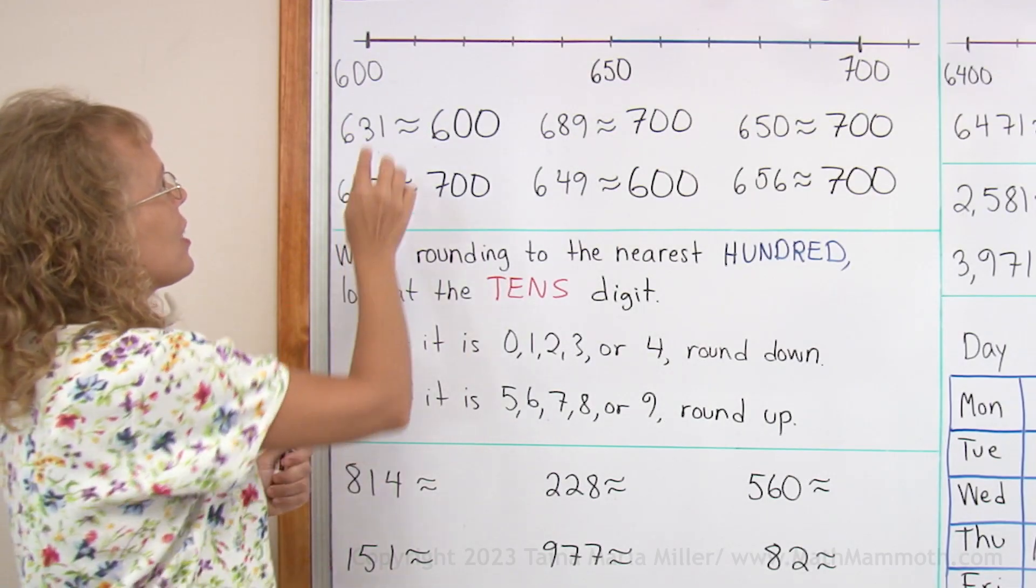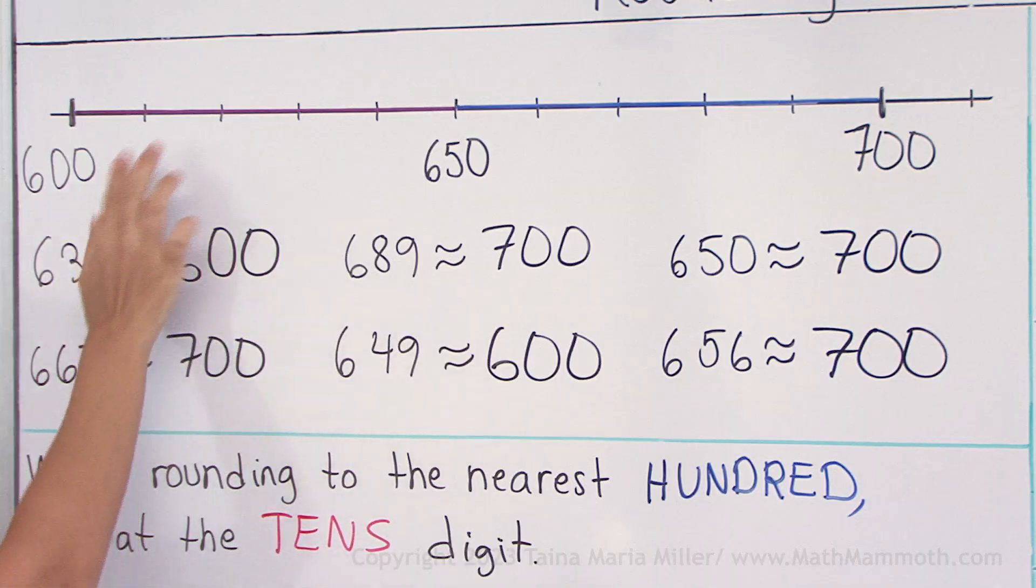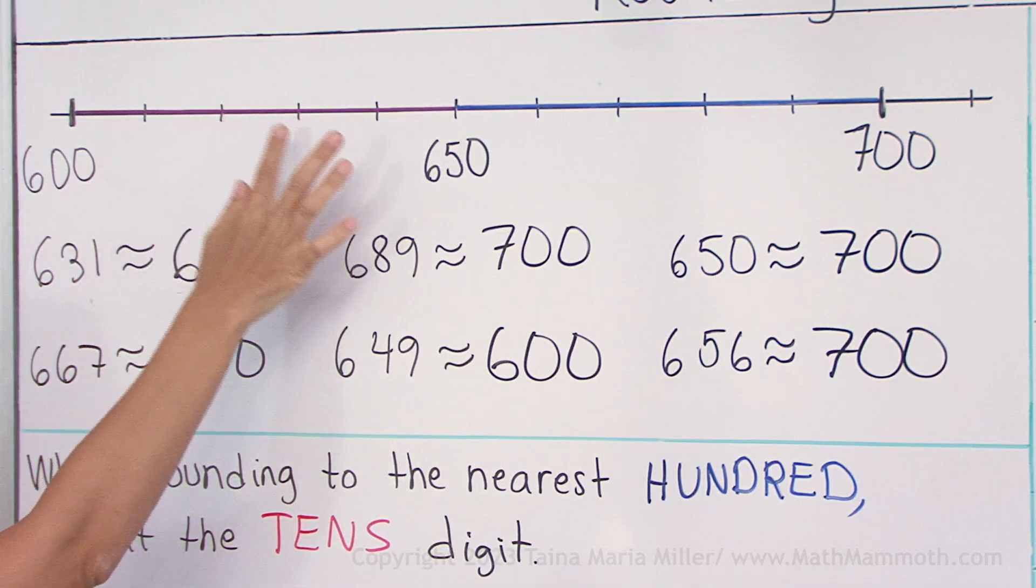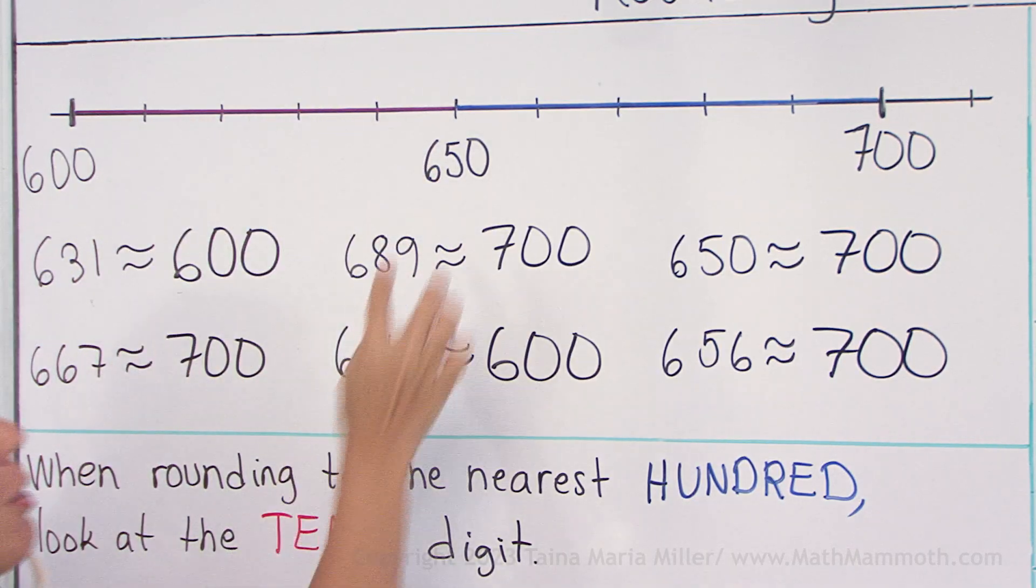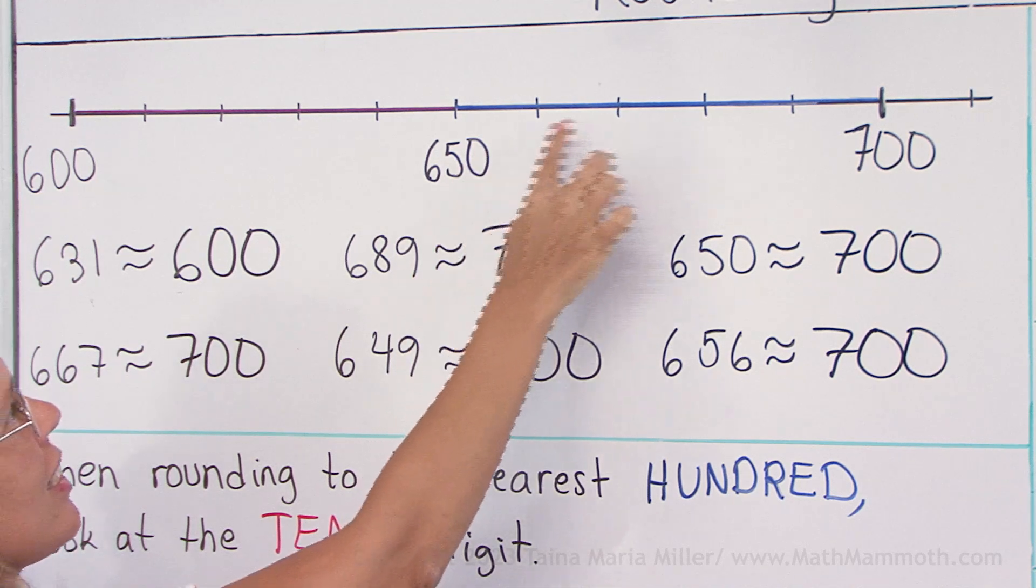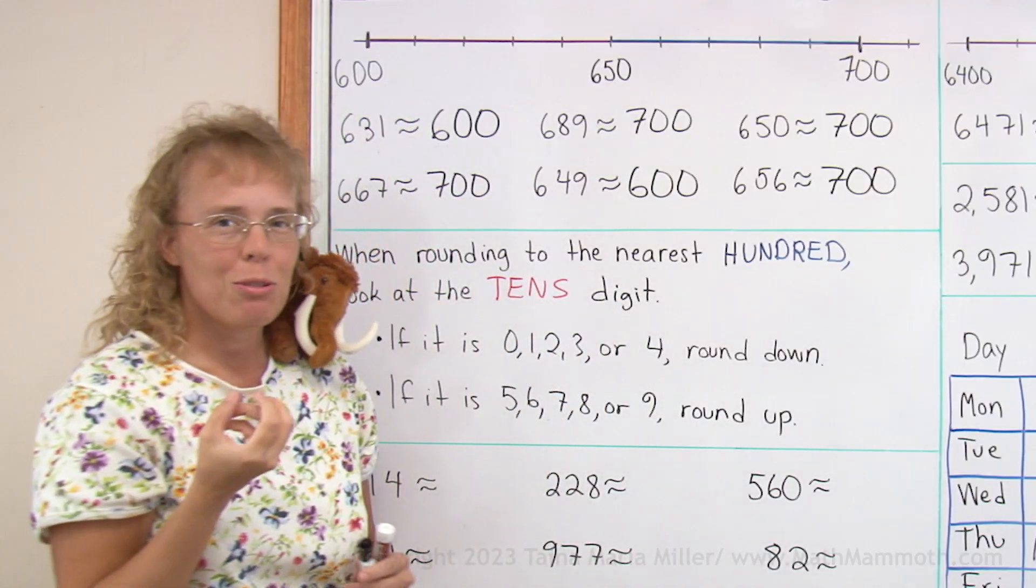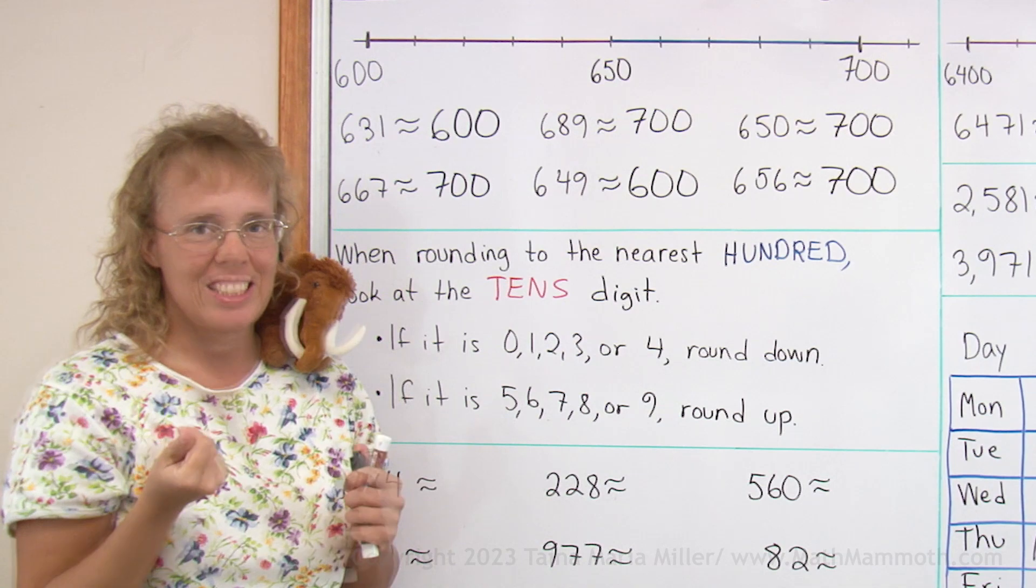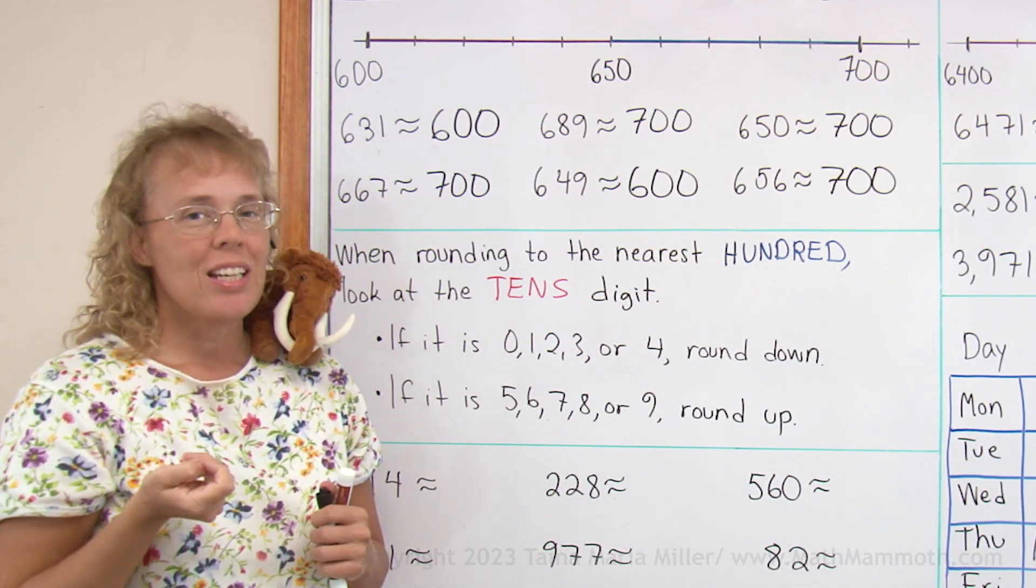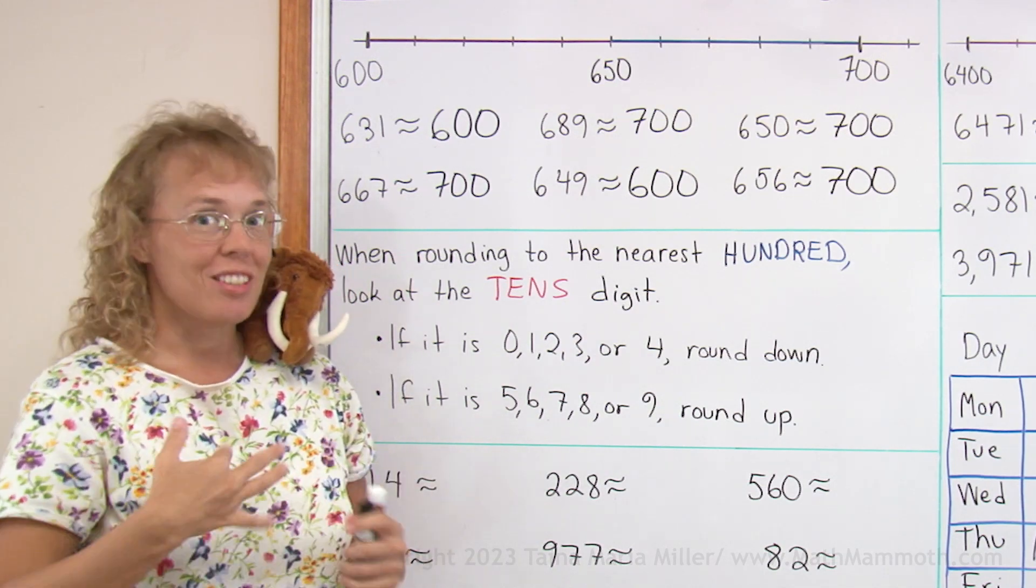The important thing we are looking at is whether the number has like 610, 20, 30, 40, or whether it is past the 50, 60, 70, 80, 90. In other words, we can just look at the tens digit in this number, and then that will tell us whether we round up or down.